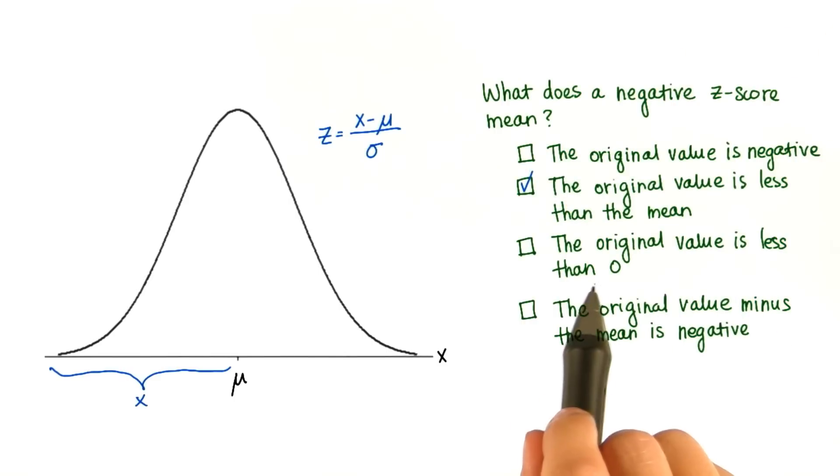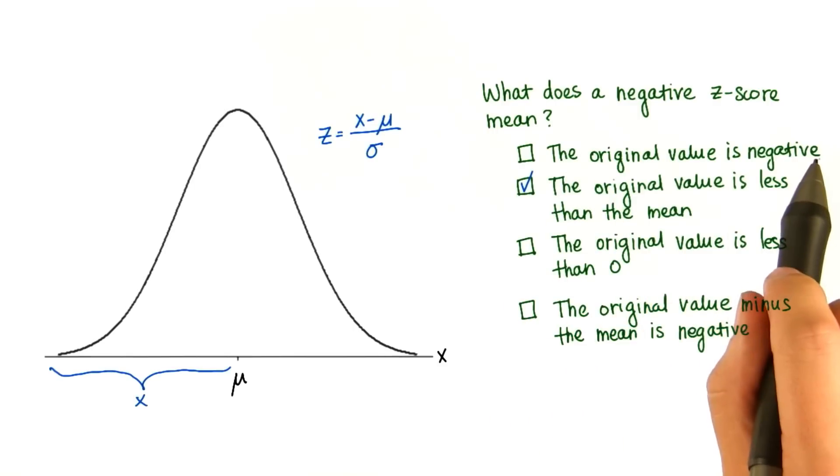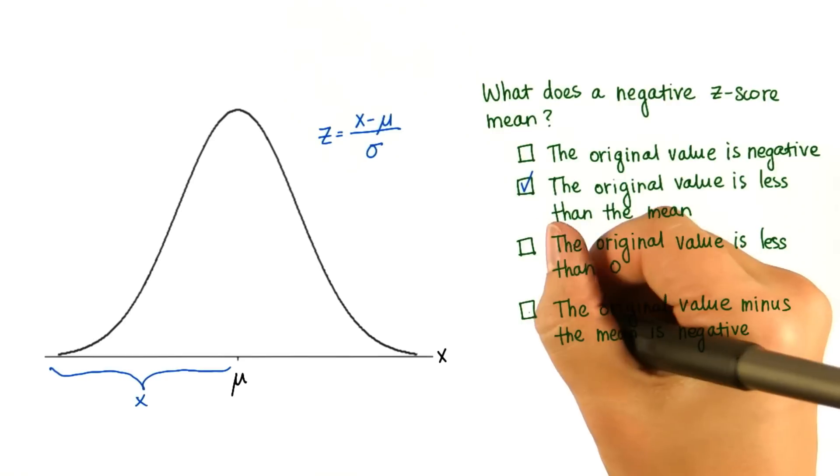The original value is less than 0 basically says the same thing as this first one, that the original value is negative. And this one, the original value x minus the mean is negative, must also be true.